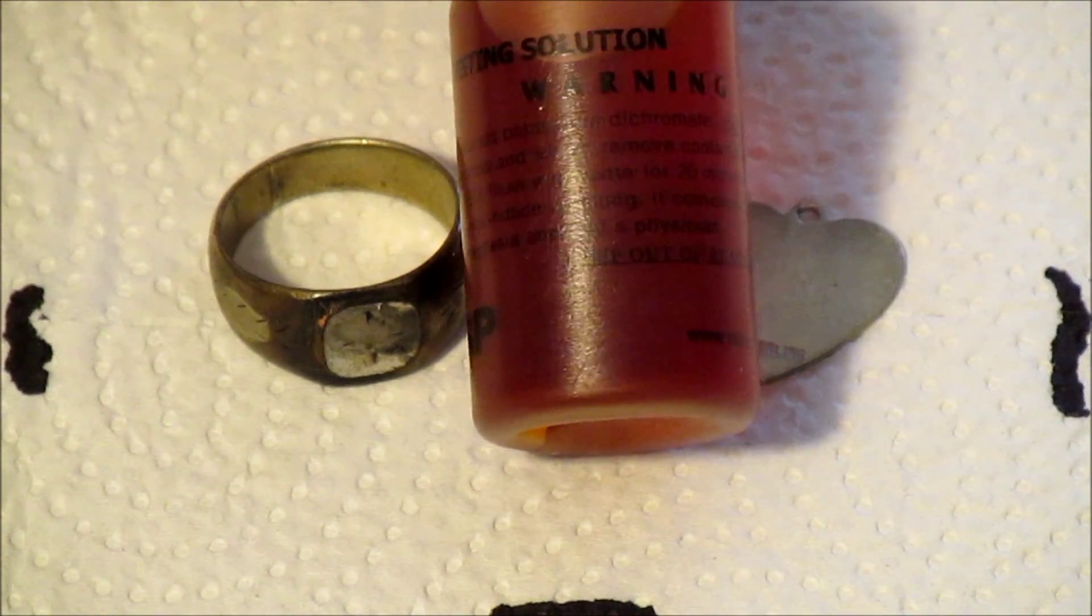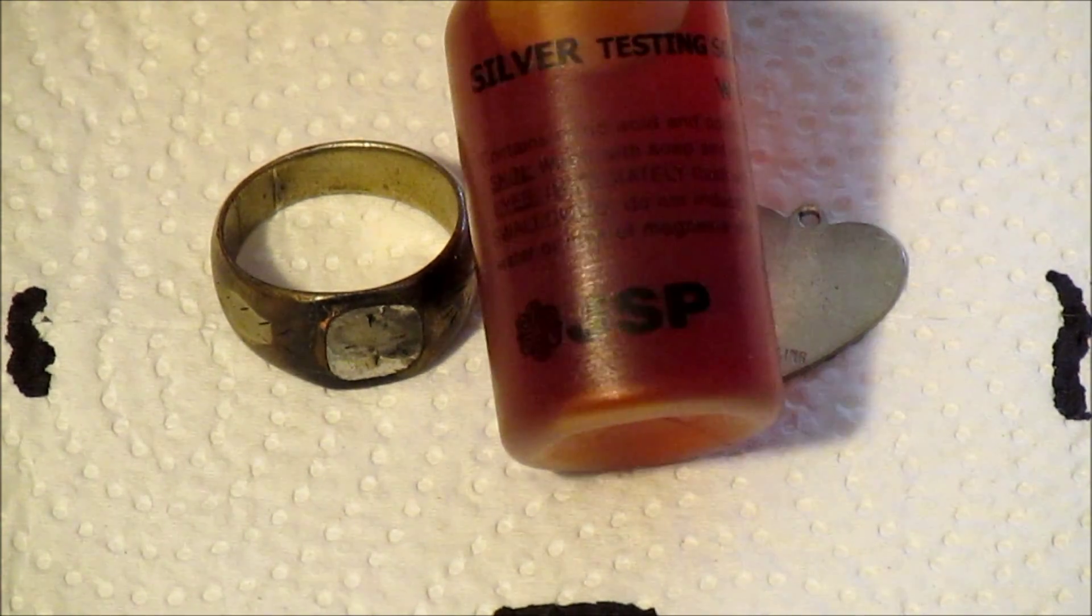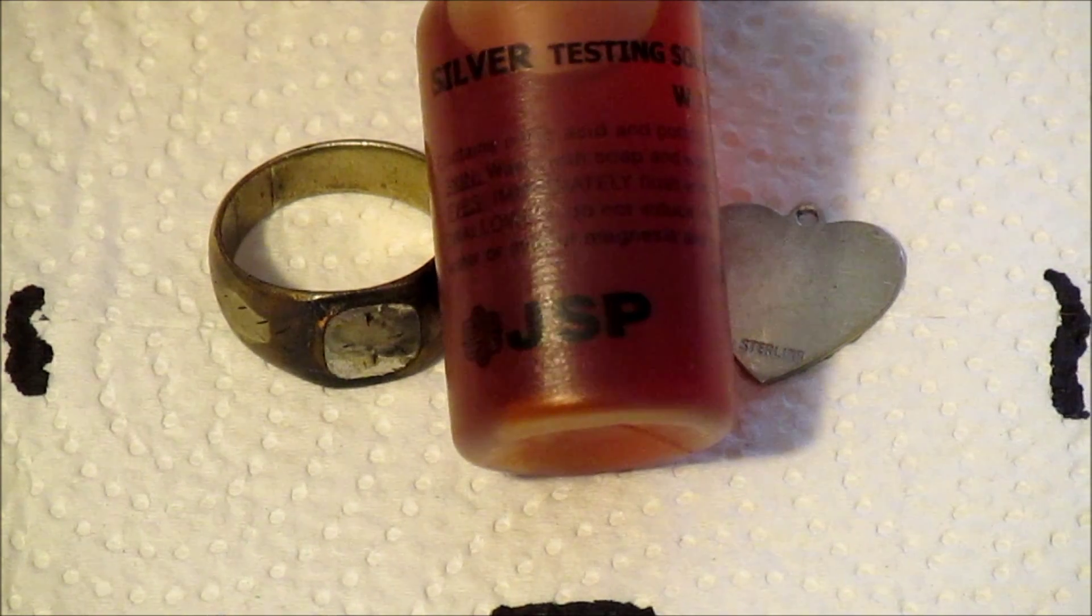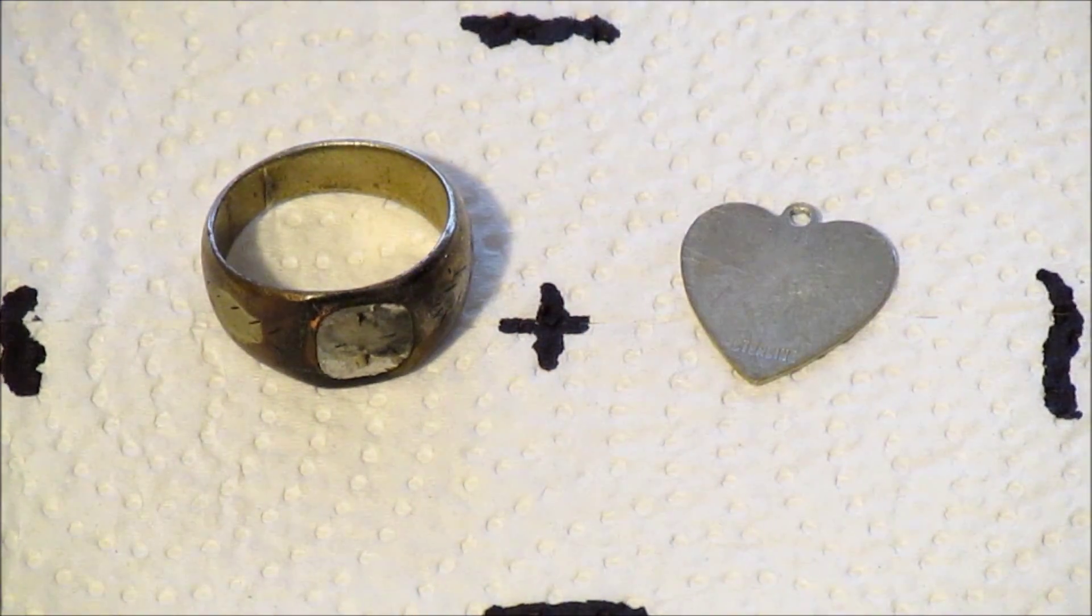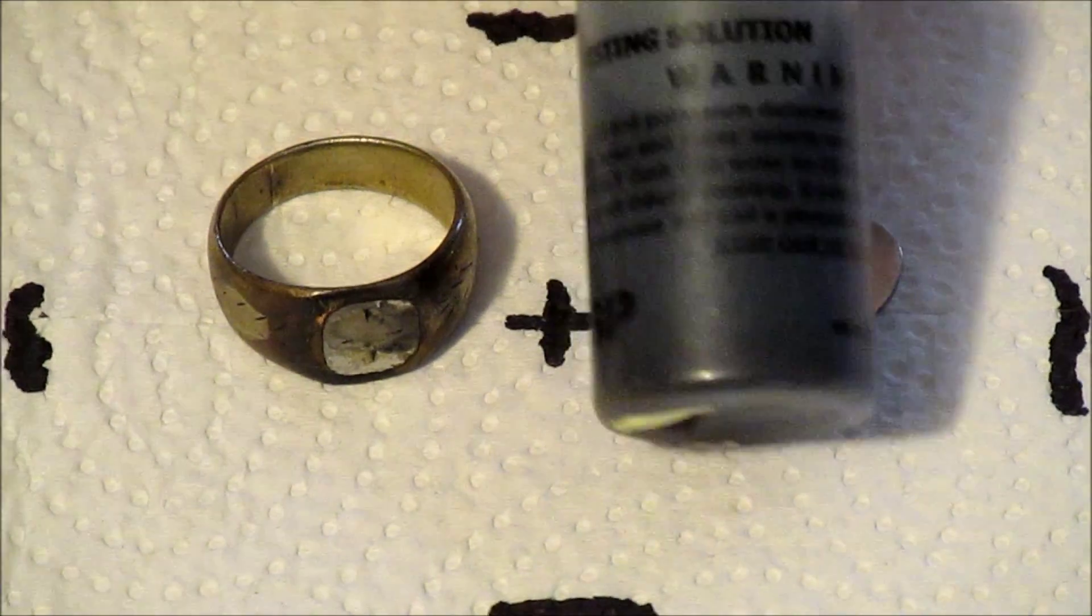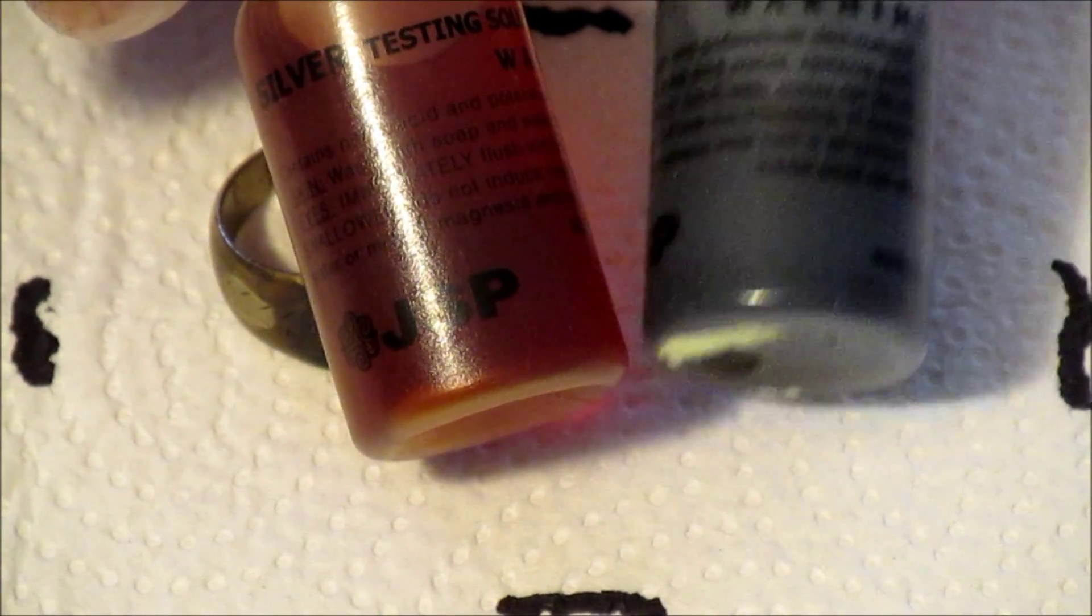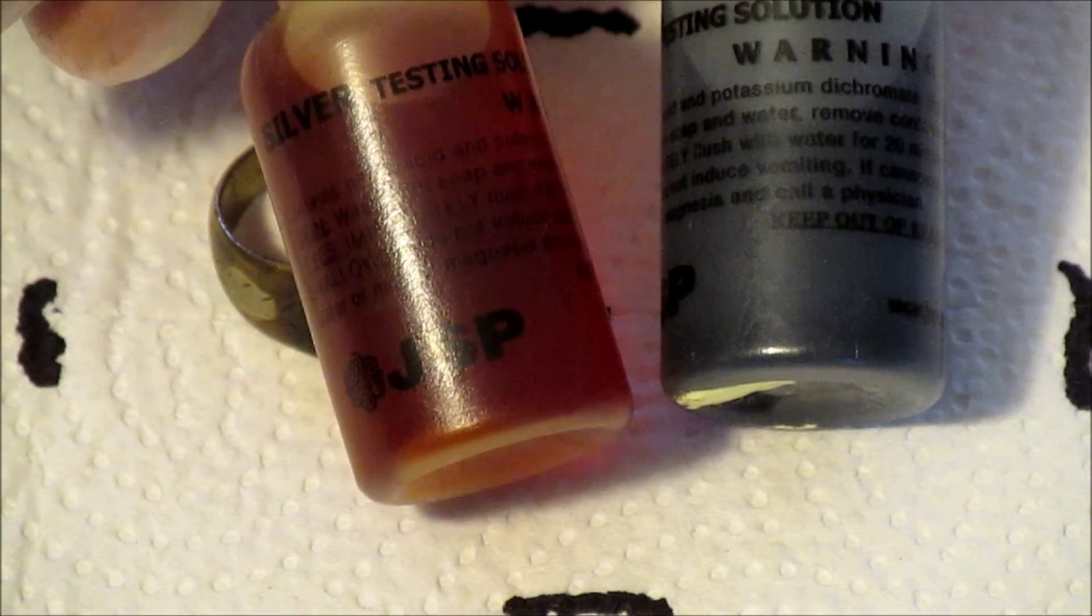This is a kind of reddish looking stuff. Now this stuff can go bad over time, and it turns darker colored when it expires. This is an old bottle that no longer works—it gives negative or false negative readings on everything.